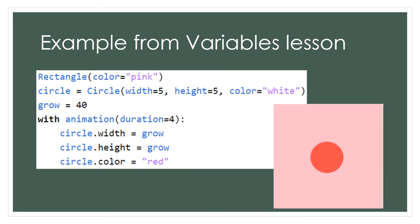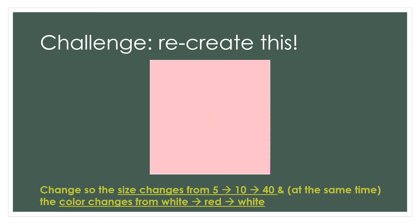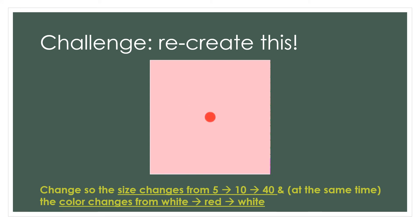For our last example, let's review the example we used in our variables lesson which shows a growing circle that changes color. What if we want to change its color more than once and change its size more than once too? Let's start at a size of 5 and increase it to 10 then 40. At the same time, let's start from the color white, change to red, then back to white again. See if you can recreate the video shown here before seeing the code. Pause here and when you're ready, resume the video.